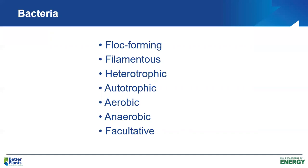We'll talk about heterotrophic and autotrophic bacteria. Heterotrophic are our predominant organisms in activated sludge, but if we're going to oxidize ammonia through the nitrification process, we'll depend on the autotrophic bacteria. We'll also talk about mode of metabolism: aerobic, anaerobic, and facultative metabolism. As design engineers and operators, we'll actually control the process to achieve the desired metabolism in the biological reactor.